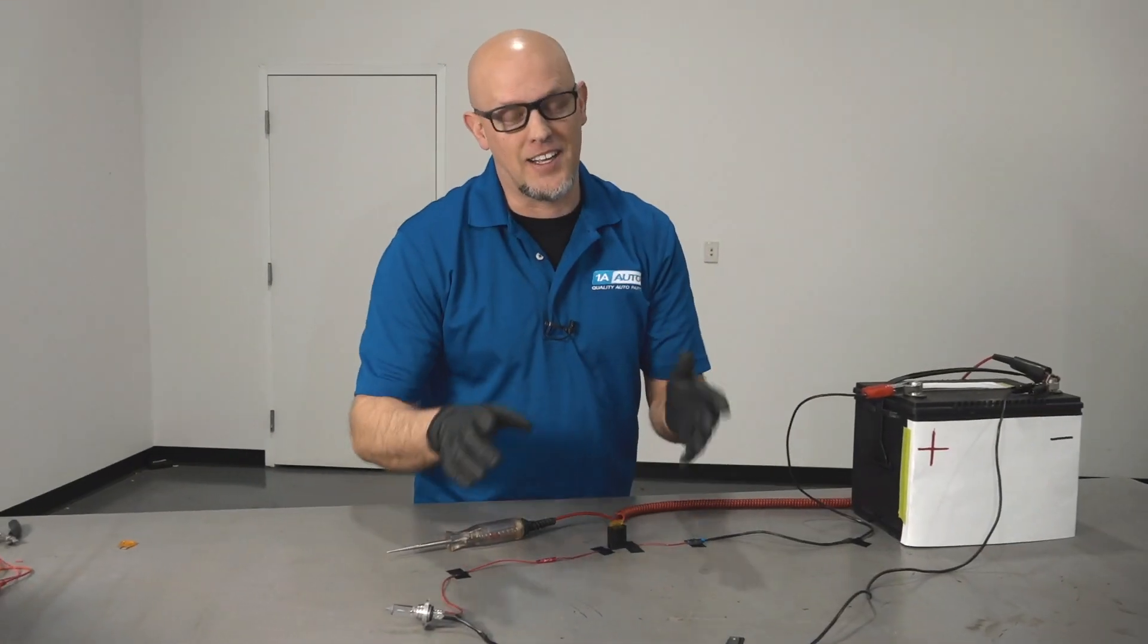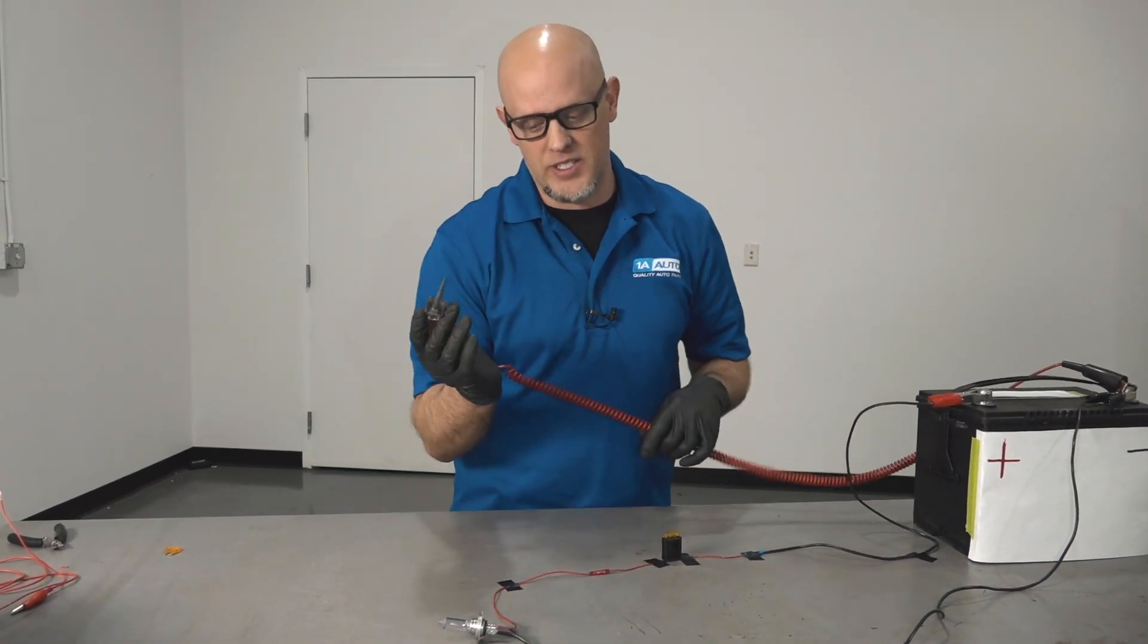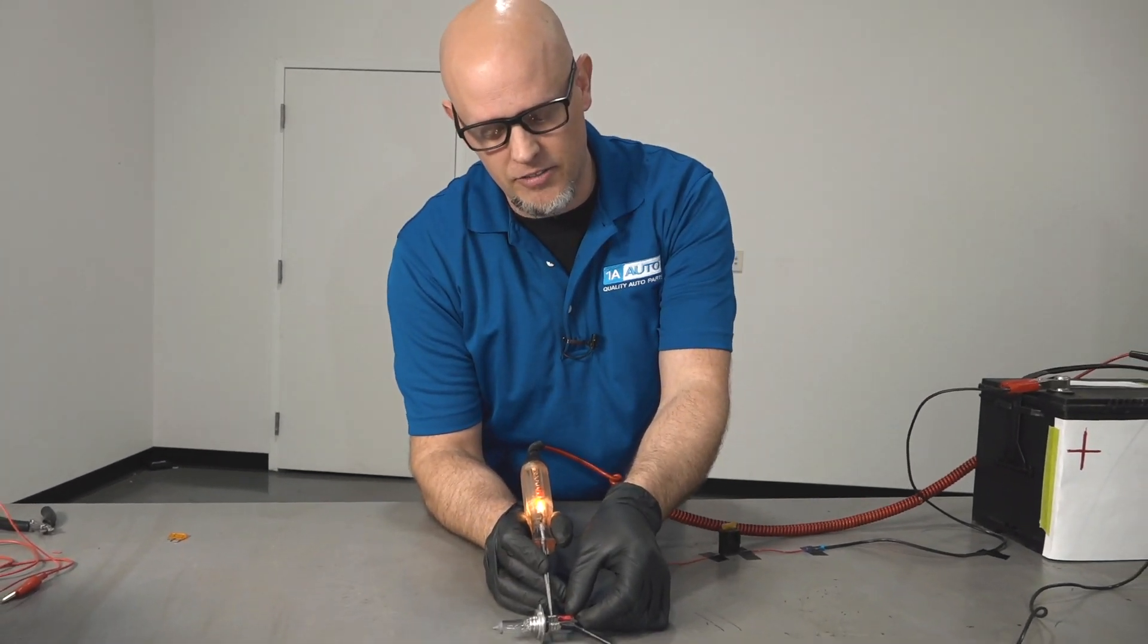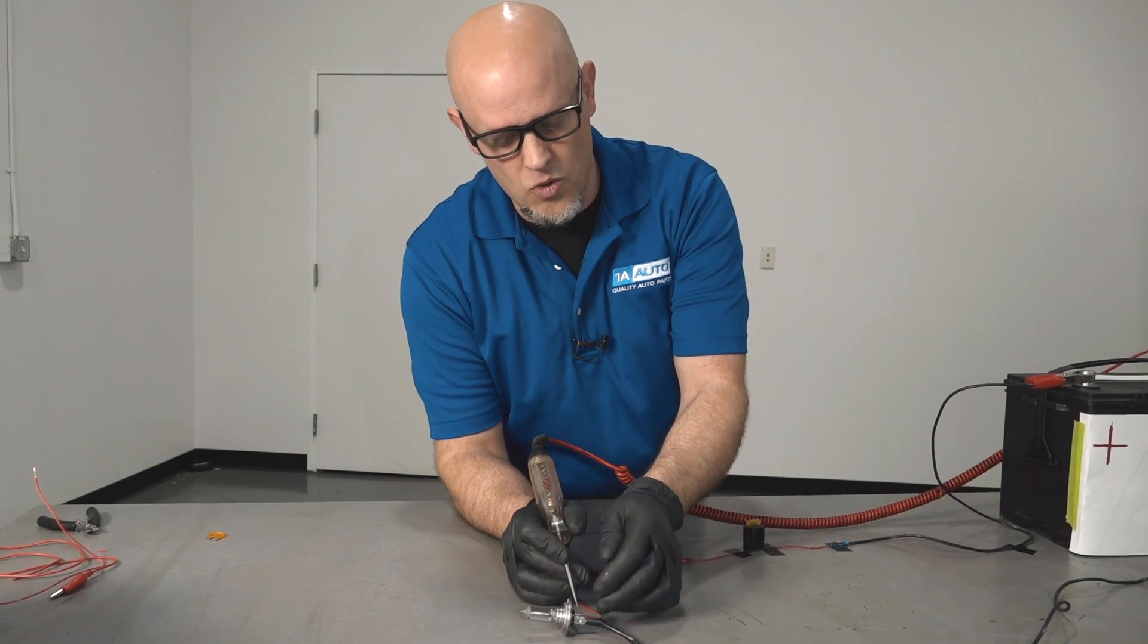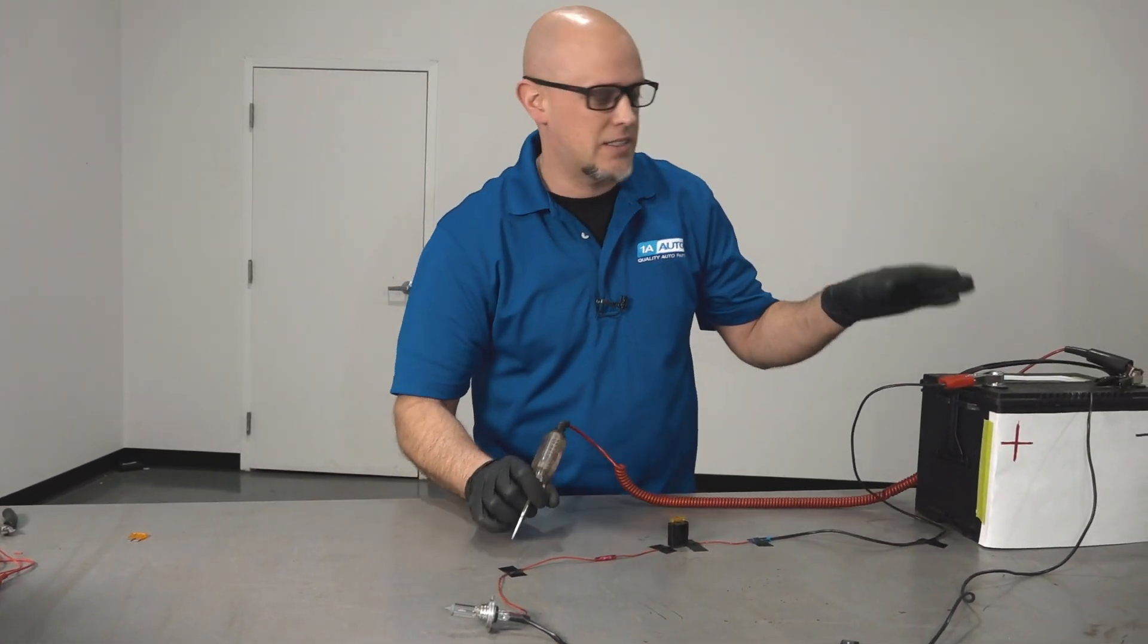So let's backtrack. If the fuse was good, let's test the wire from the battery all the way to the bulb. So we take the test light and test the circuit right here, and if the light comes on, then this wire all the way from the bulb back to the battery through the fuse box is good.